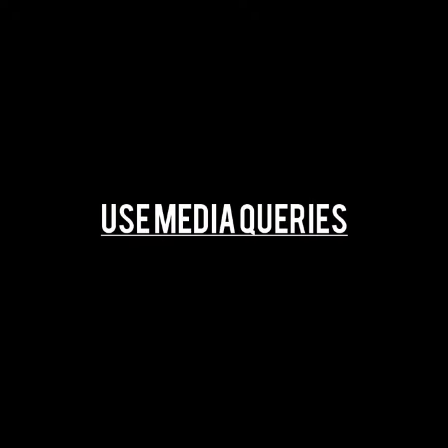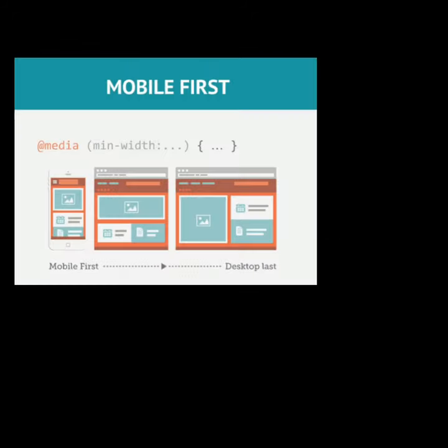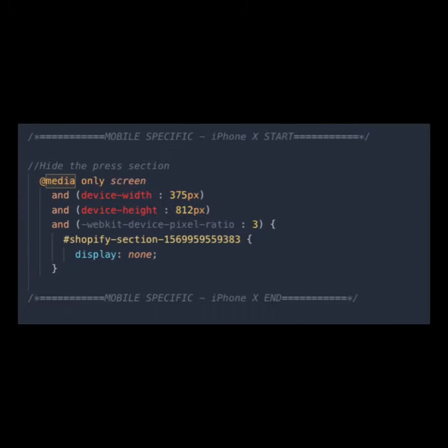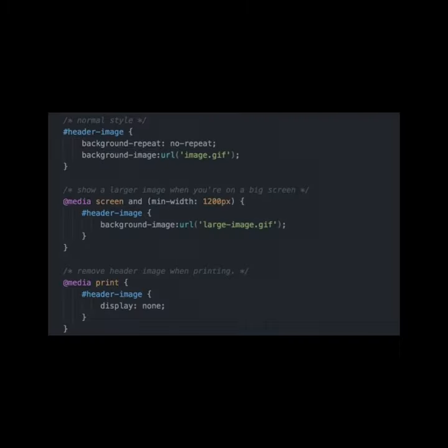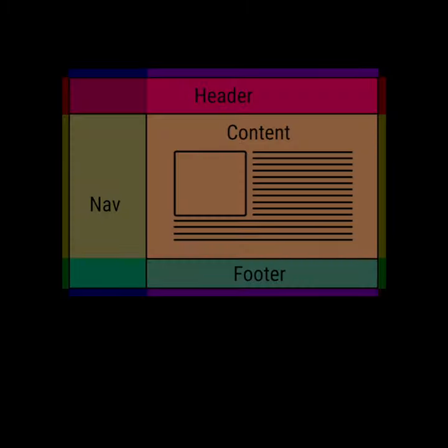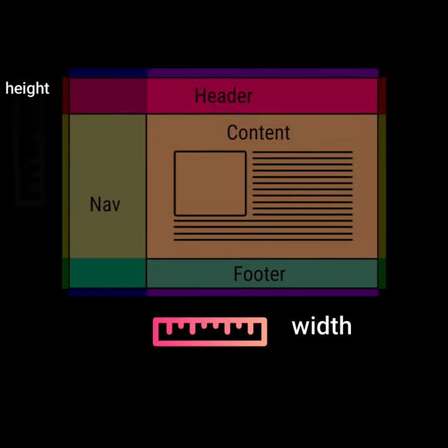Number 2 is Media Queries. They make it easy to change styles based on the types of device rendering the content, or the features of that device — for example, width, height, orientation, ability to hover, and whether the device is being used as a touchscreen.